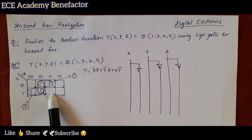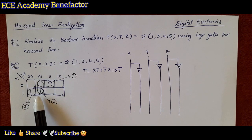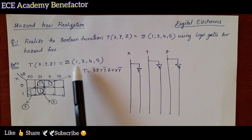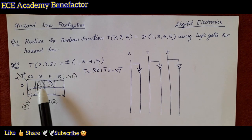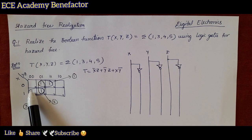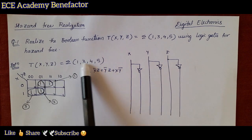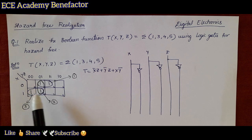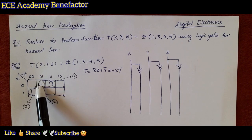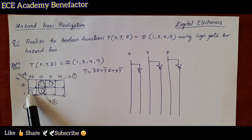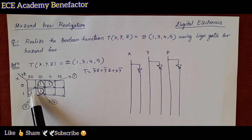After numbering the cells, we fill in 1s for minterms 1, 3, 4, and 5 in the K-map. Now we need to circle the groups. We have circled one group forming one pair and made a second circle for the other pair.